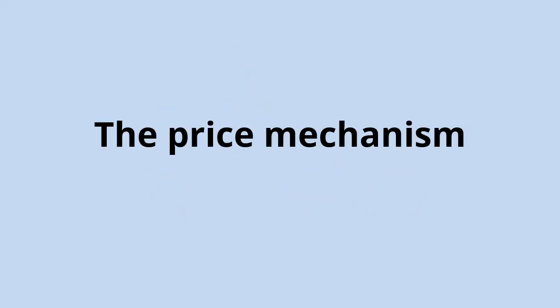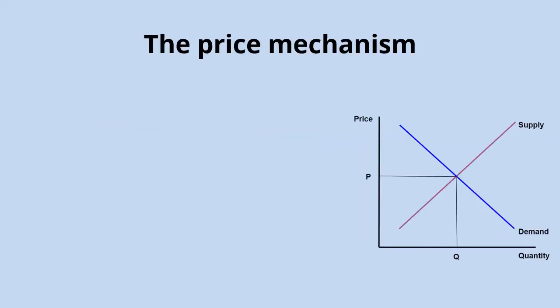This video is about how the price mechanism works to allocate resources. The price mechanism, with these forces of supply and demand, has a really important role to play in a market economy. It fulfills three main functions.